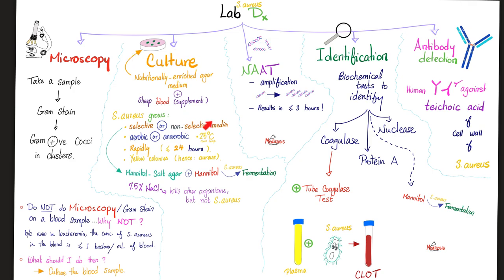Staph grows aerobically or anaerobically, usually rapidly, giving yellow-golden colonies — that's why we call it aureus, meaning golden — and we call it staph because they cluster together. Identification: the tube coagulase test is important. Add plasma and bacteria — the blood clots because coagulase causes coagulation. You can also detect antibodies against the cell wall of staph aureus, particularly the teichoic acid.